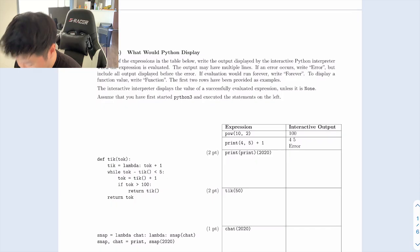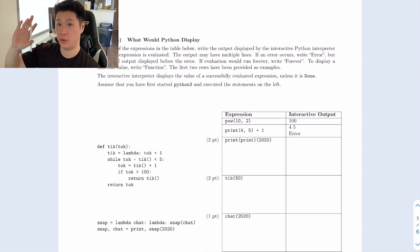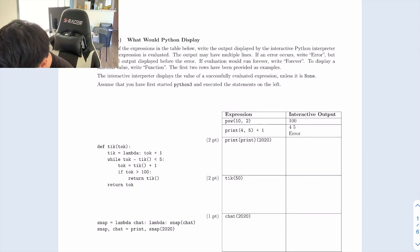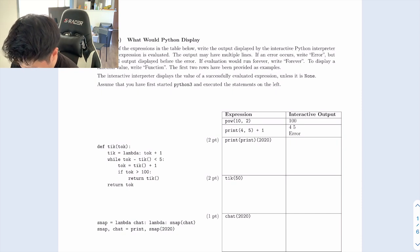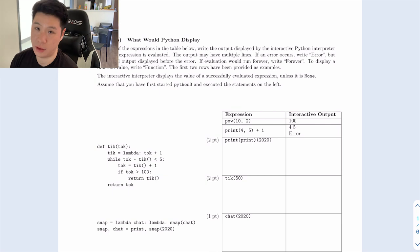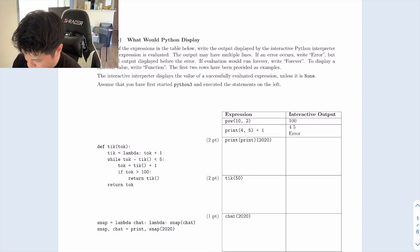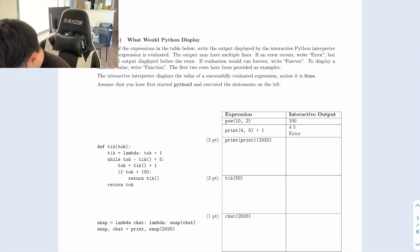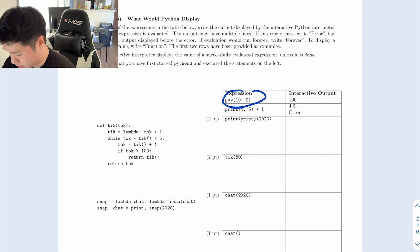The first question is kind of tricky — they want to test your understanding of how the computer evaluates and reads code. You can write a ton of code and your input and output will be expected, but they want to make sure you understand the underlying low-level actions going on with Python. For each expression in the table, write the output displayed by the interactive Python interpreter. If an error occurs, write 'Error' but include all outputs before the error. If it runs forever, write 'Forever.' To display a function, write 'Function.'